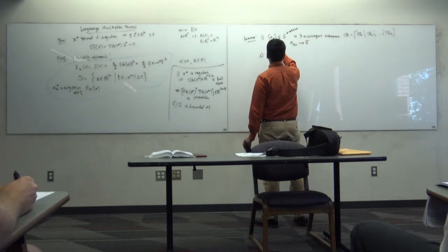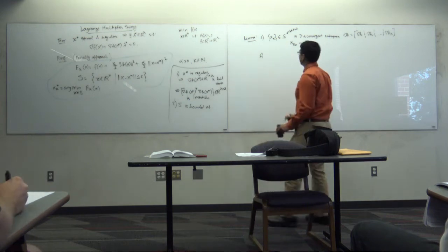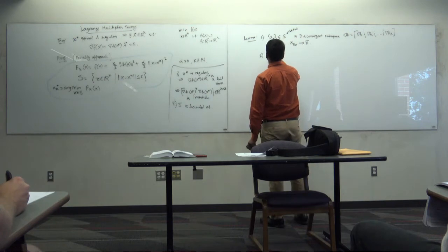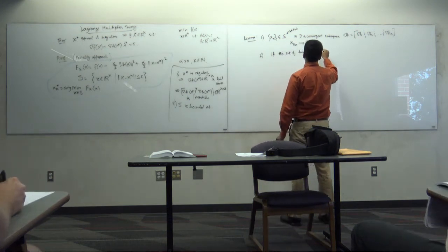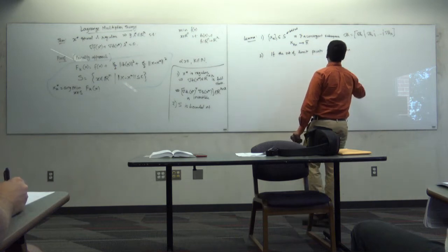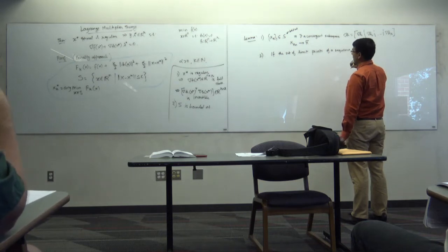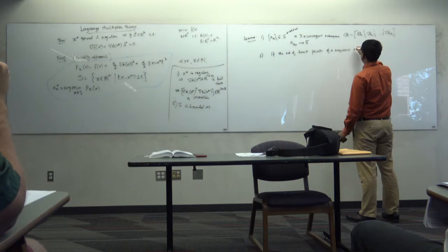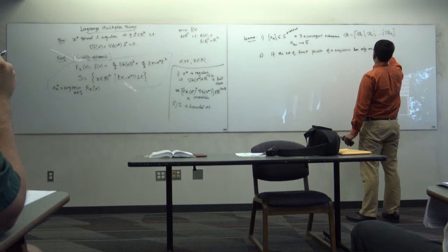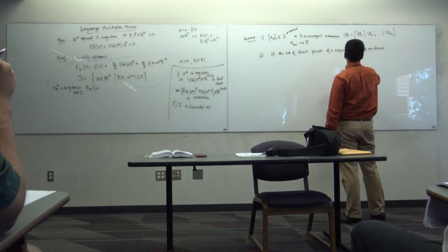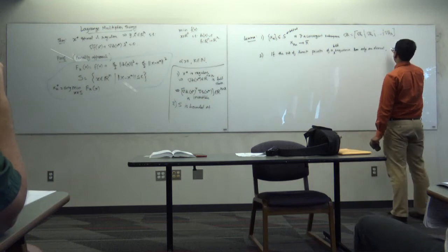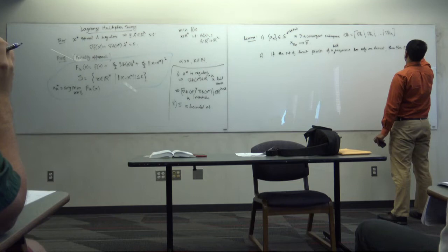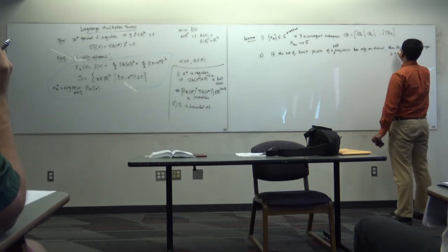The second part that can be proven is: if the set of limit points of a bounded sequence has only one element, then the sequence converges to that point.